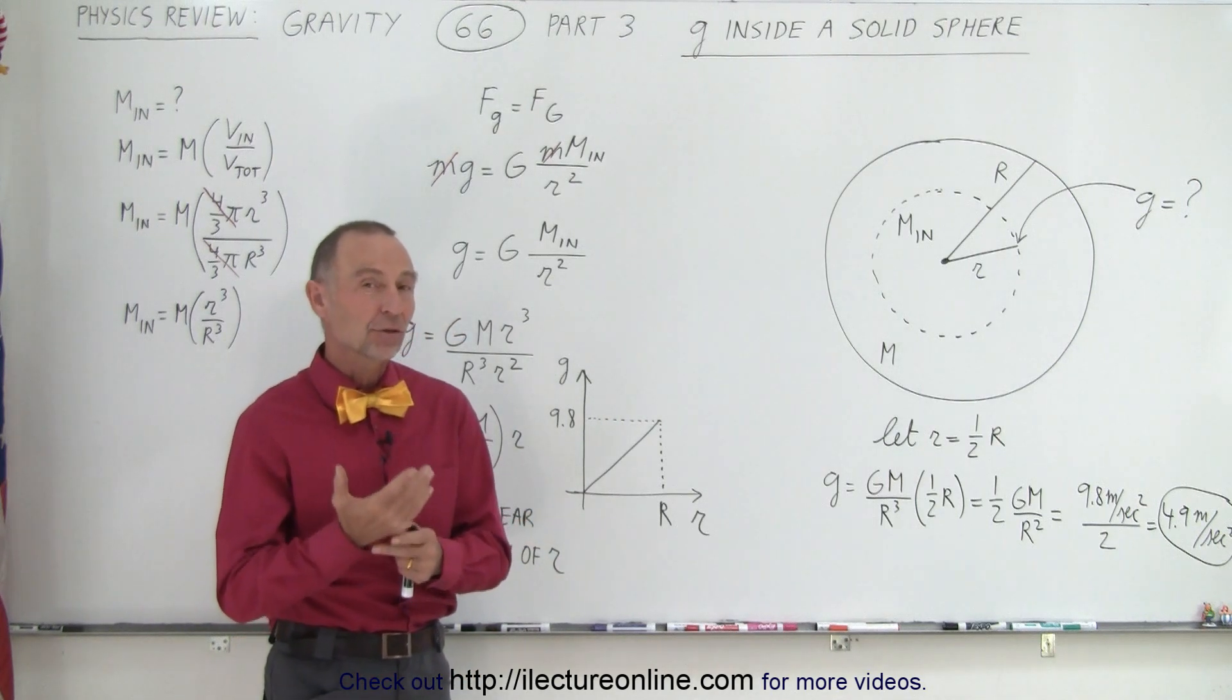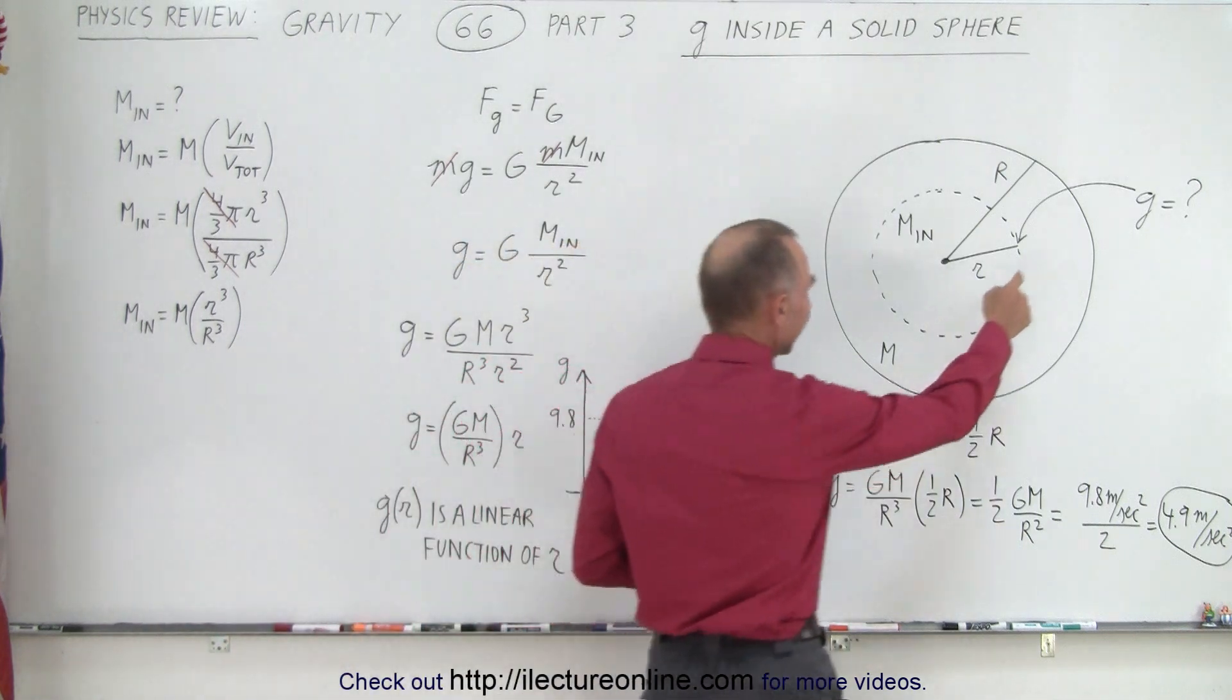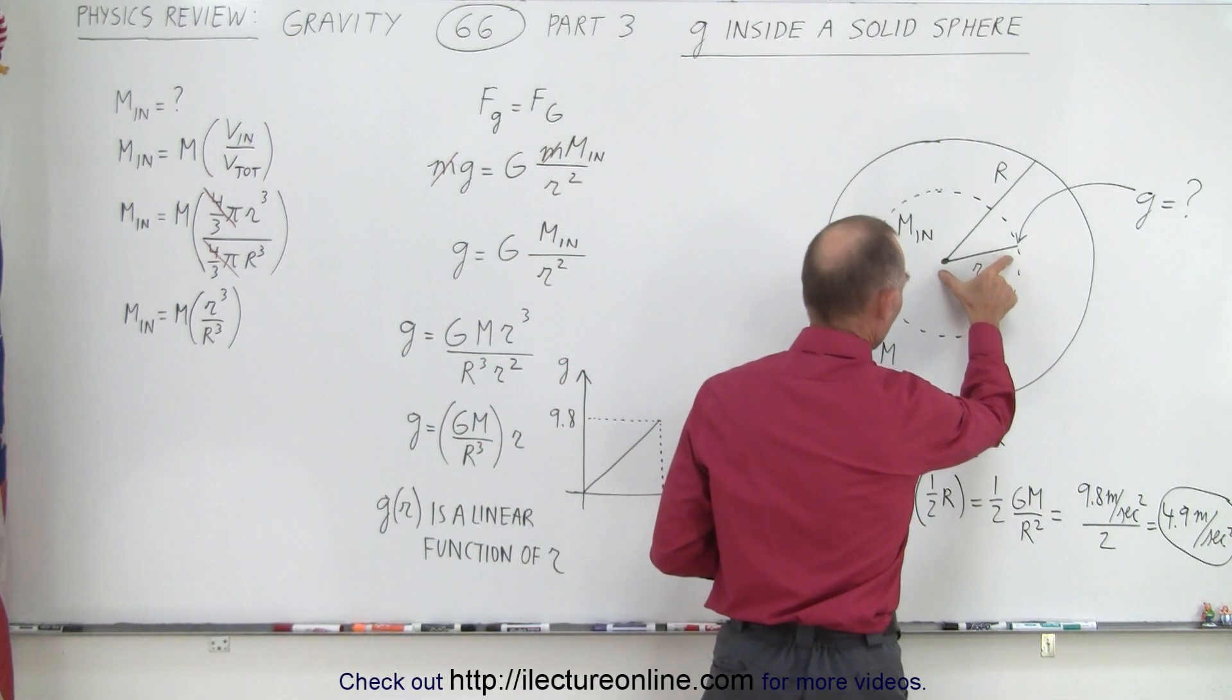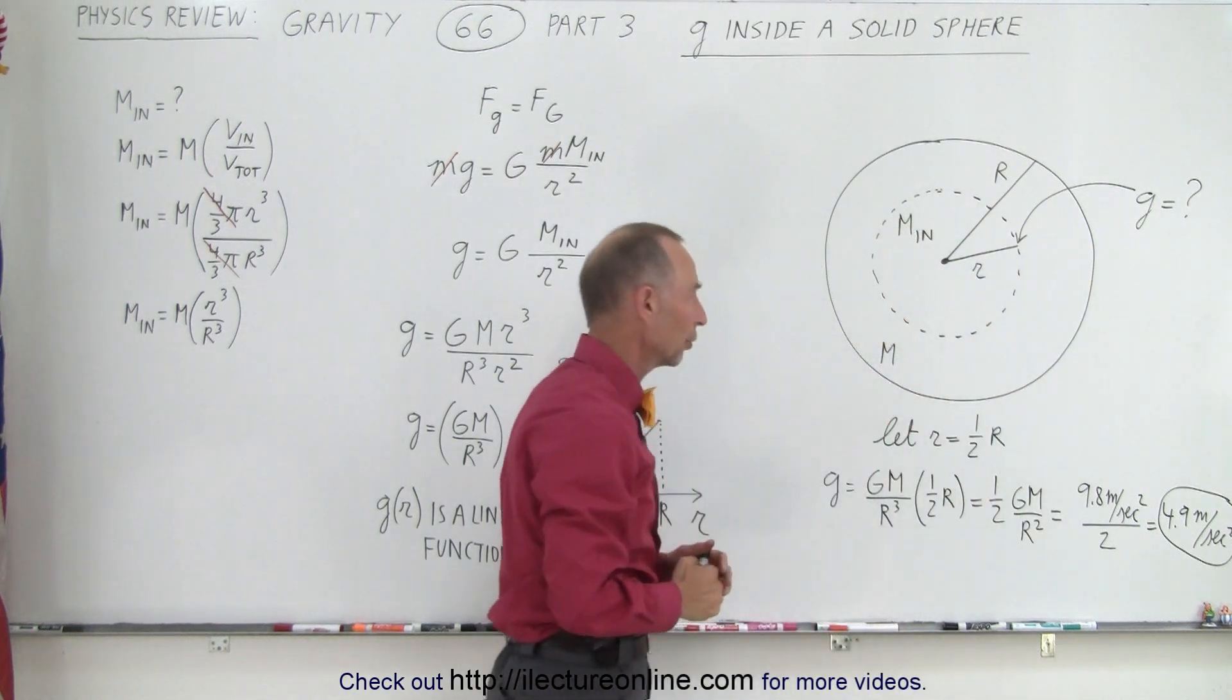And associated with that would be the acceleration due to gravity at that location. So let's say we're somewhere inside the Earth, at some distance r away from the center. Big R is the radius of the whole object, in this case, the whole Earth.